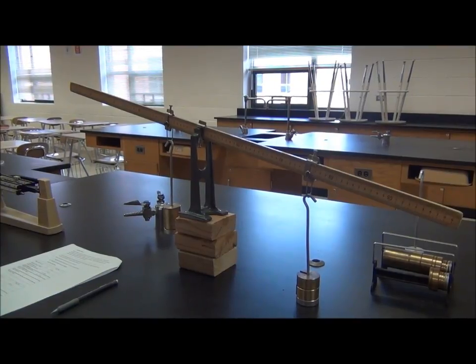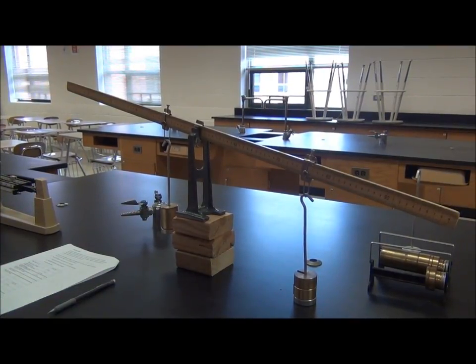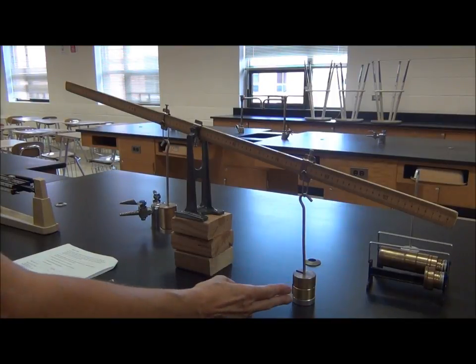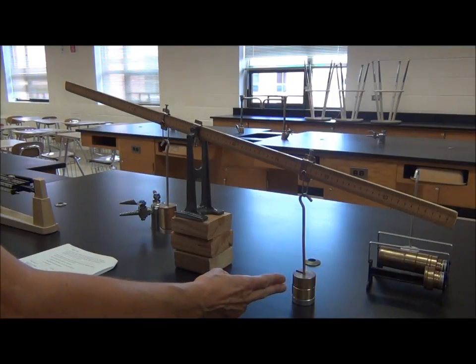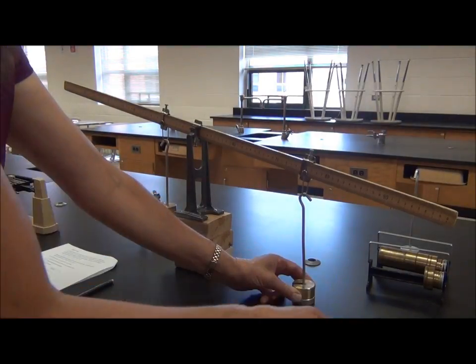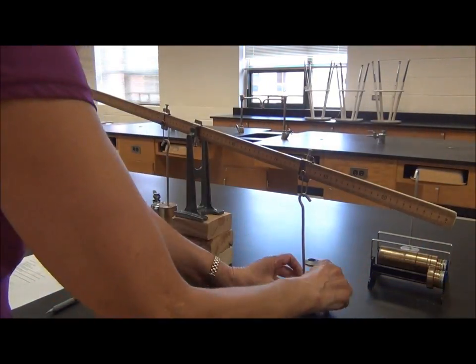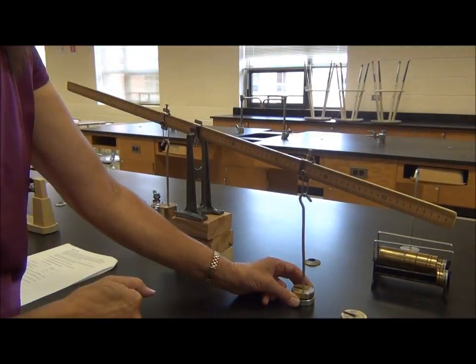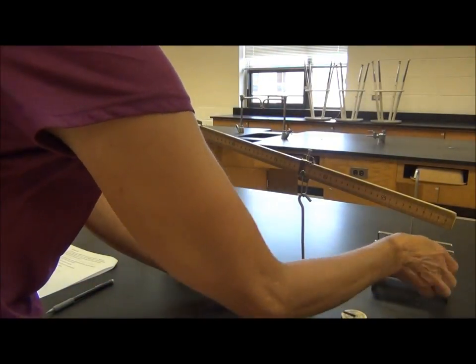We're going to regulate the lab for the clockwise torque. I'm going to ask in trial 1 that you use 400 grams in brass mass. On trial 2, please use 200, and on trial 3, please use 100. In that way, we're going to regulate the key.